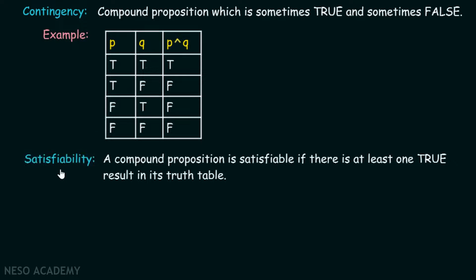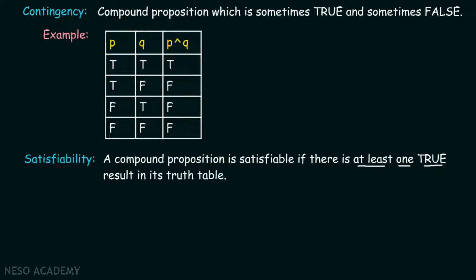A compound proposition is satisfiable if there is at least one true result in its truth table. We can say that p AND q is satisfiable because there is at least one true result in its truth table. We can also say that a tautology is always satisfiable.